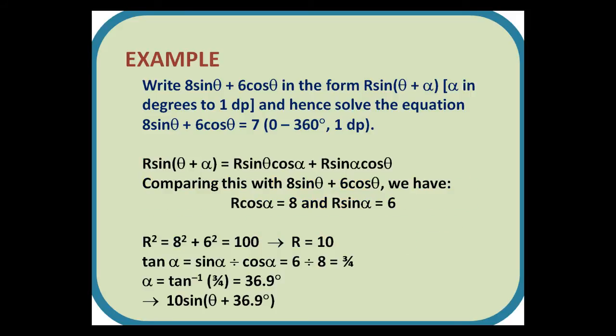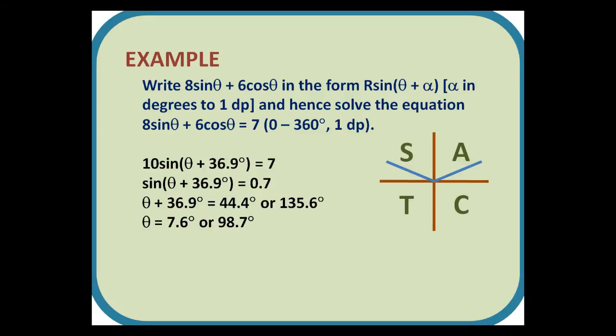So R sin(θ + α) is R sin θ cos α + R sin α cos θ. Comparing this with 8sin θ + 6cos θ, we have R cos α = 8 and R sin α = 6. Using Pythagoras gives R = 10, and using tan α being sin α divided by cos α, we find that tan α is 3/4, and hence α is 36.9°. So we can write 10sin(θ + 36.9°). When we put this equal to 7, we can divide it by 10, and then we can find the inverse sine, which gives us 44.4°, or 135.6°. Take away 36.9 from both of those giving final answers of 7.6 and 98.7.